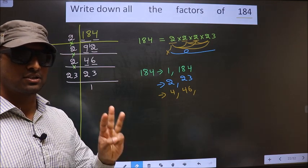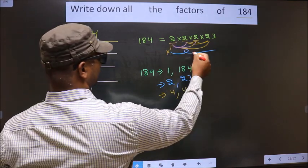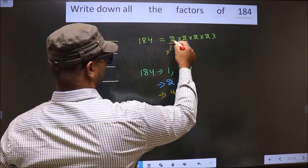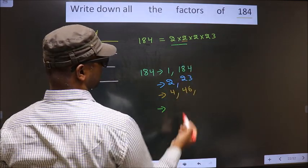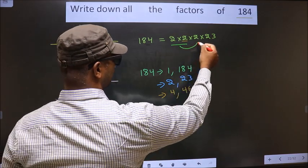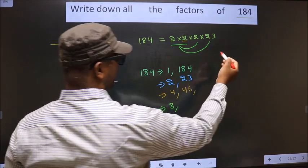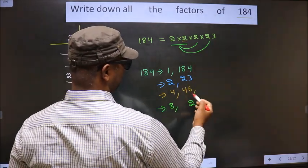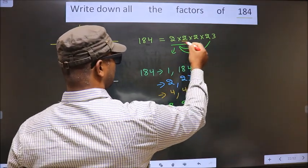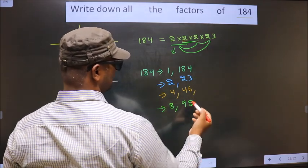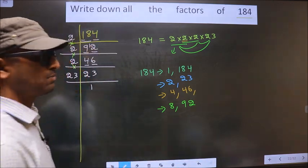Now we take combinations of 3 numbers. I fix two 2s: 2 × 2 = 4, then combine with another 2 to get 8. Then 4 combined with 23: 4 × 23 = 92. Even if I swap which two 2s I use and combine with 23, I still get 92. So no more unique combinations of 3 numbers are possible.